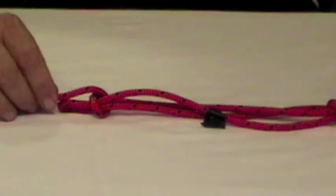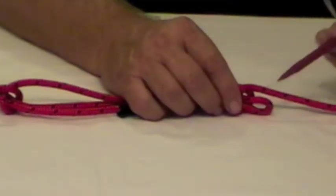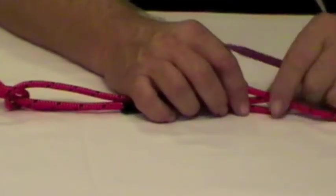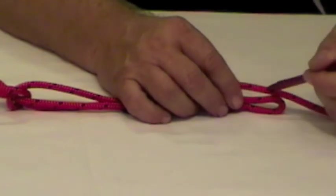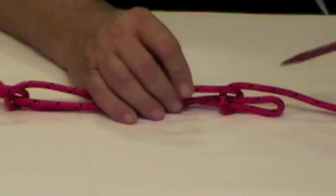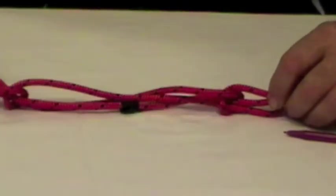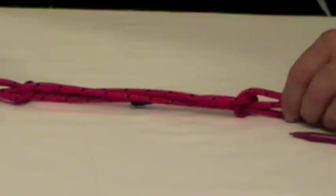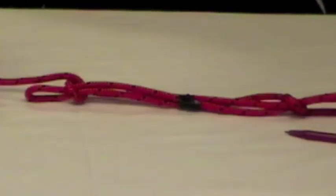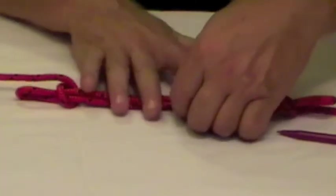And secure that and then also at this end do the same. So we'll be securing those two there, this one and that one. Alright. Cable tie. Just cable tie those together and at the other end and then our sheep shank is nice and safe. And there's our damaged section there.